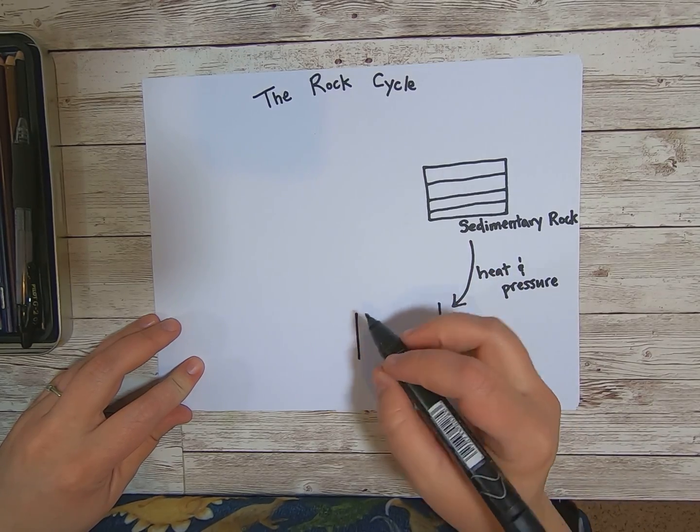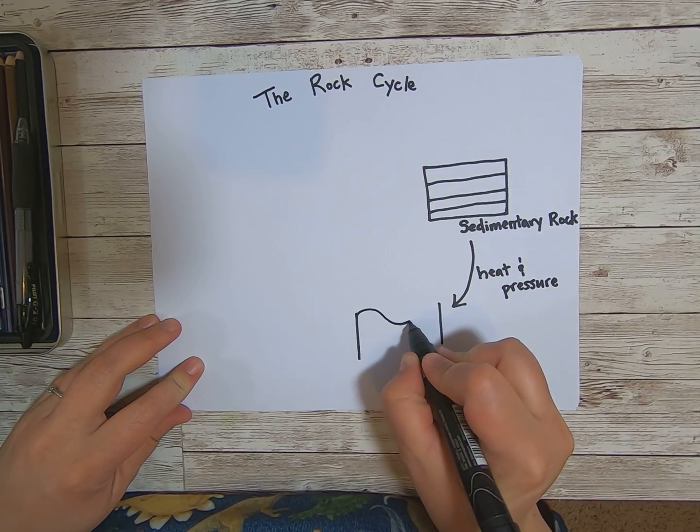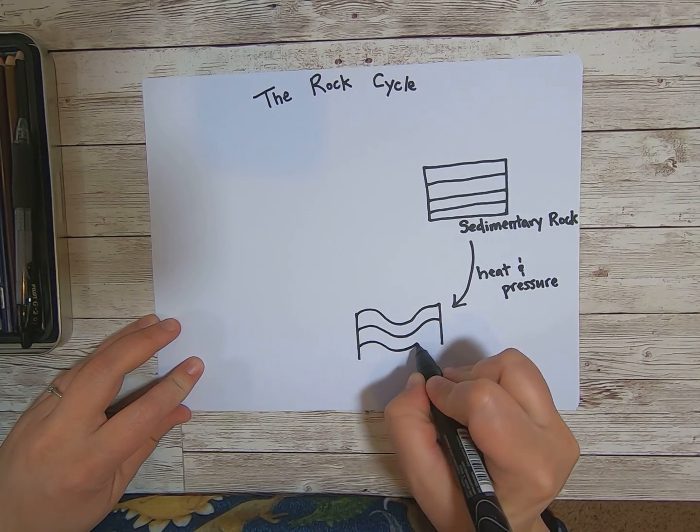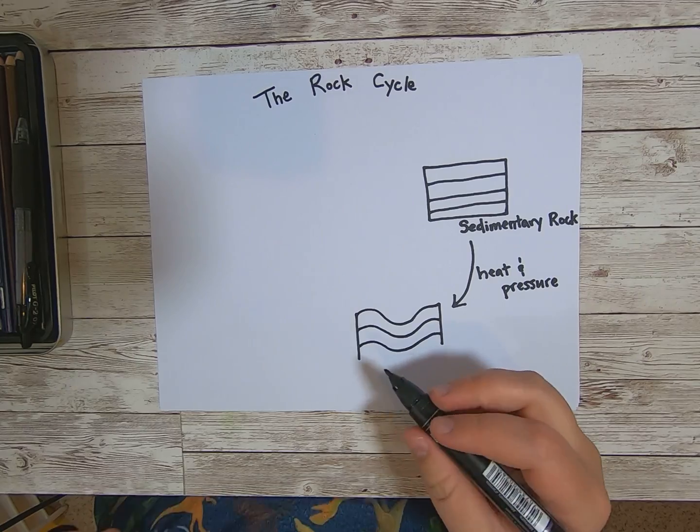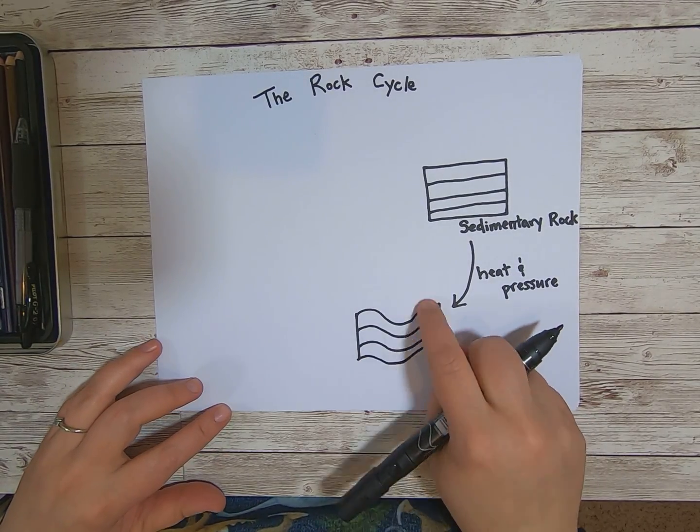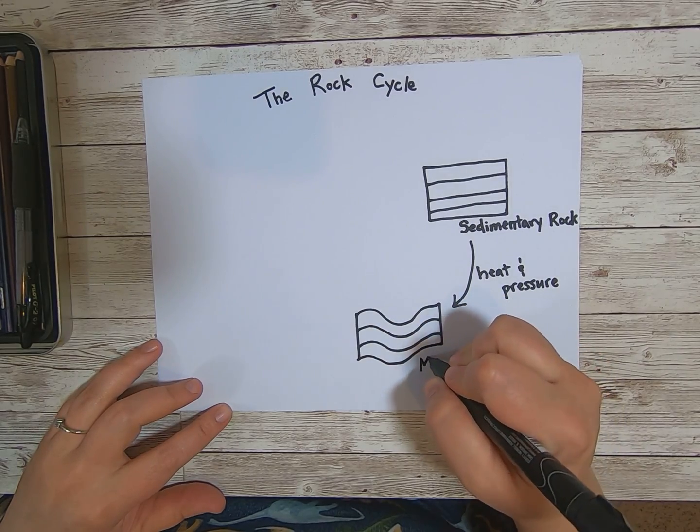We're going to draw another rock right here. This one has wavy wavy lines. It's gone through heat and pressure, that rock has been squished. And a rock with wavy lines is a metamorphic rock.